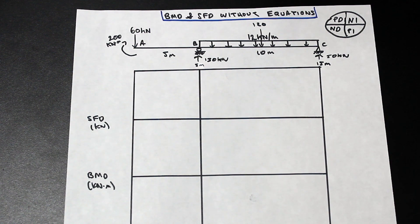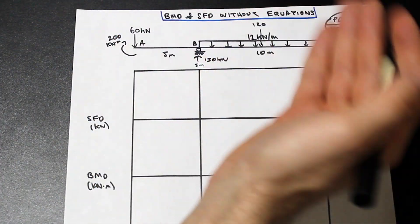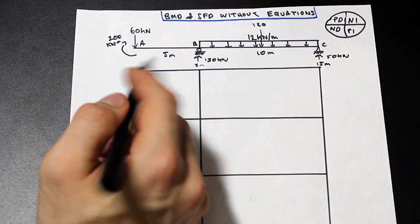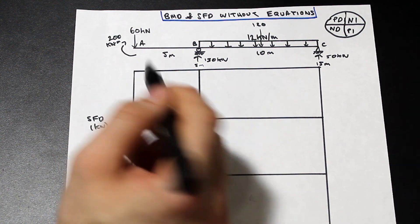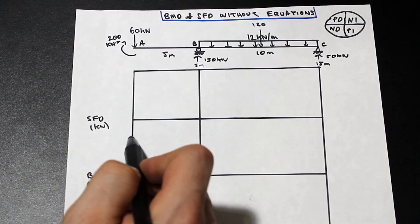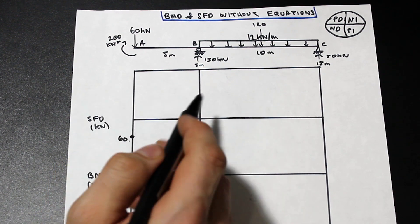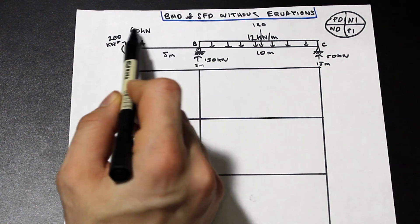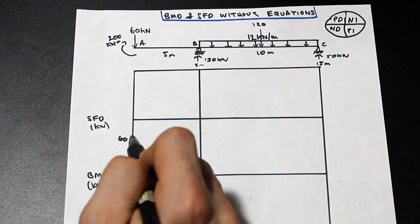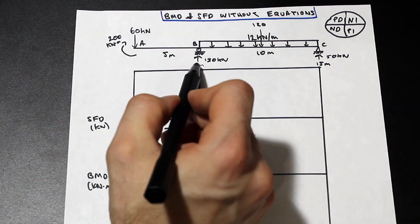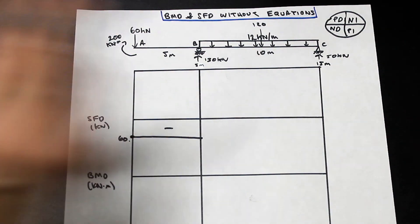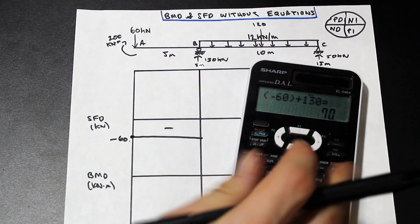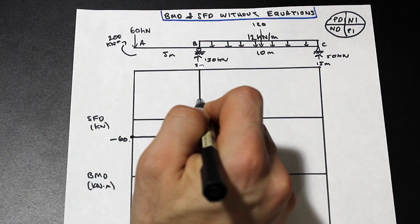Now that we have the reactions — BY is 130 and CY is 50 — we can start drawing the shear force diagram without deriving equations. We start at A and go from left to right. Don't worry about the concentrated moment — that won't affect the shear. We have a 60 kilonewton point load, so we go down 60 kilonewtons. There are no other forces acting on the beam from A to B, so that's a constant shear of negative 60 kilonewtons all the way across. When we get to B, we have a reaction of 130 kilonewtons, so we simply add 130 to negative 60 and we get positive 70.